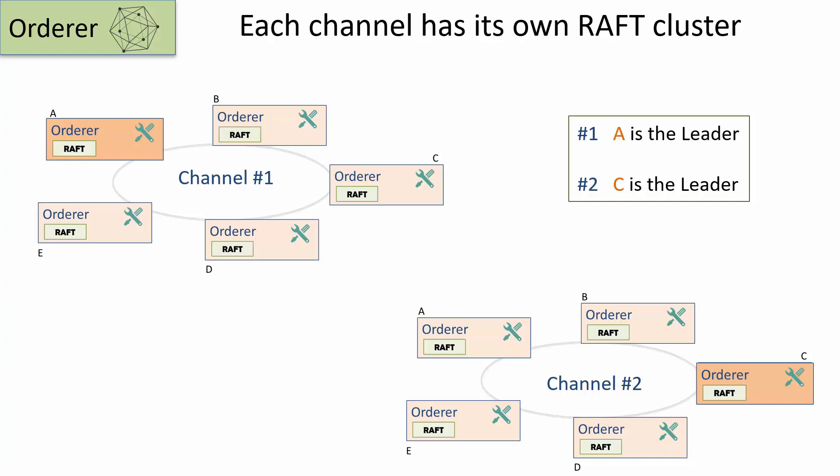Let's say in channel number one, the orderer A goes bad. In that case, within channel number one, the followers will elect a new leader. This election process in channel number one will have no impact whatsoever on channel number two.